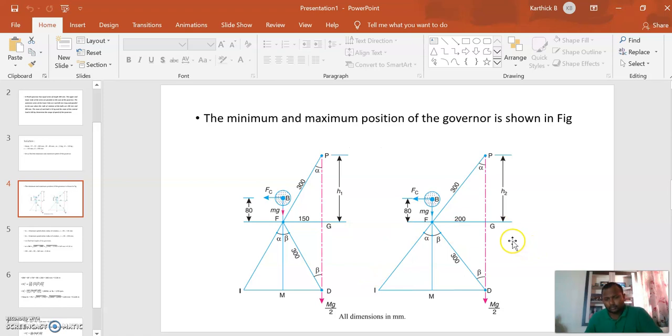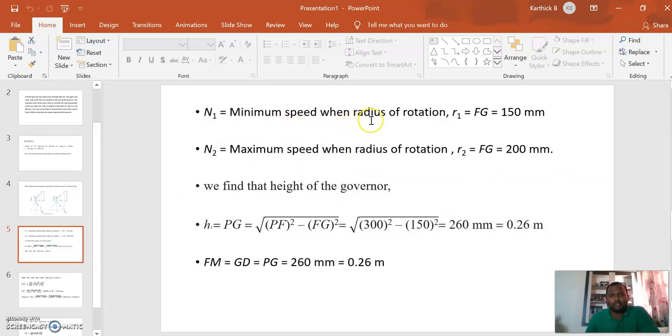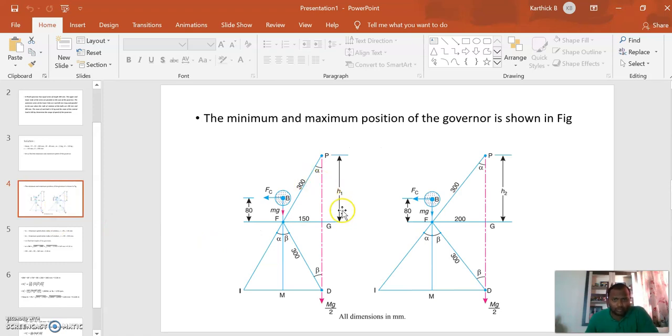From this data we have to find h1 and h2. With h1 and h2 we have to find N1 and N2 so that we can find the range of speed. Let's take N1 as the minimum speed when the radius of rotation is 150 mm, and N2 as the maximum speed when the radius of rotation is 200 mm.